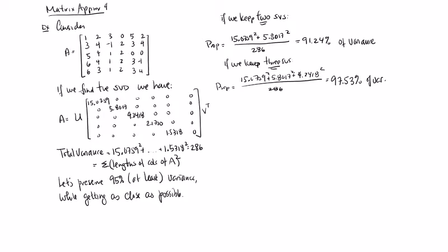So if we want to simplify this matrix — and by simplifying we mean getting rid of the directions in which the data has the least spread, keeping the highest priority directions, eliminating the small ones — we need to keep three singular values. We're trying to achieve 95% or more while removing as many as possible, so we have to keep three.